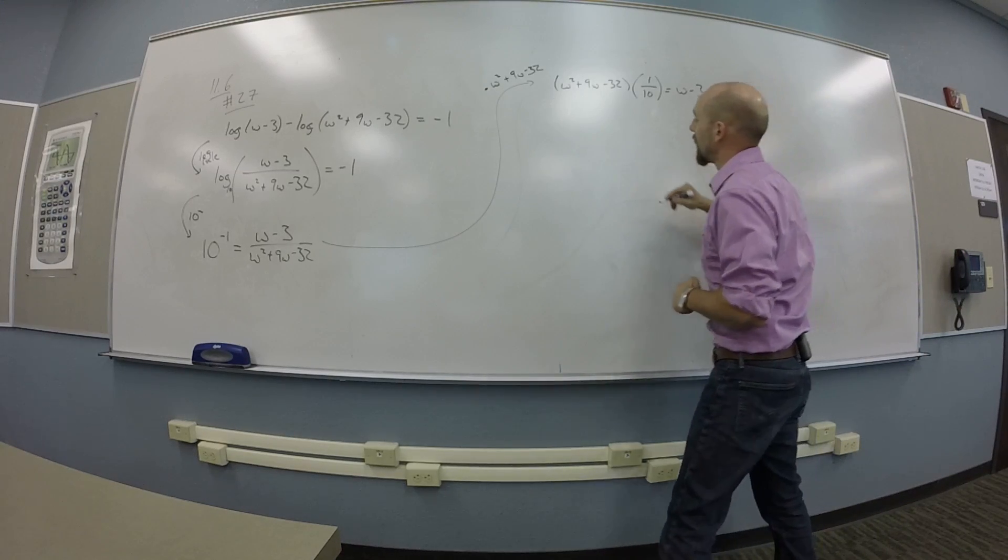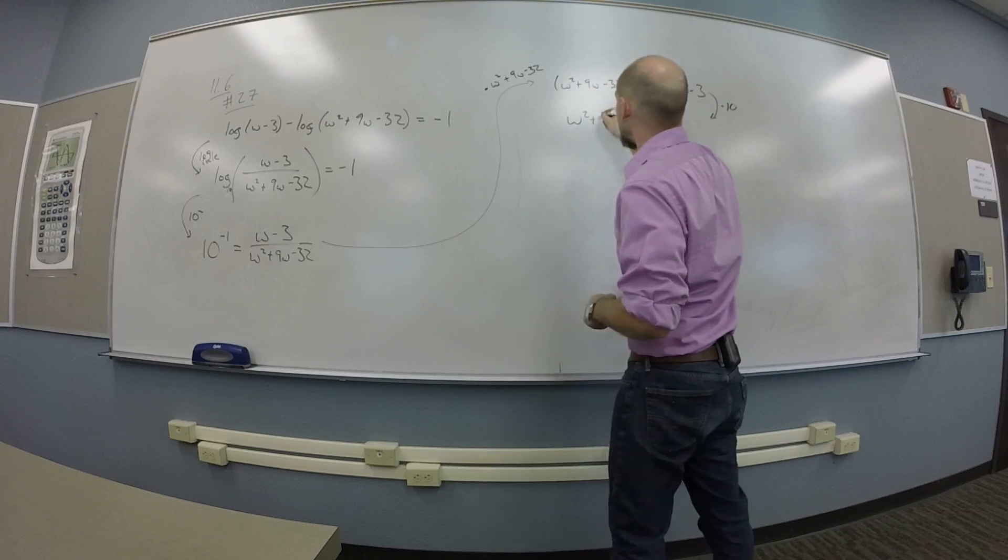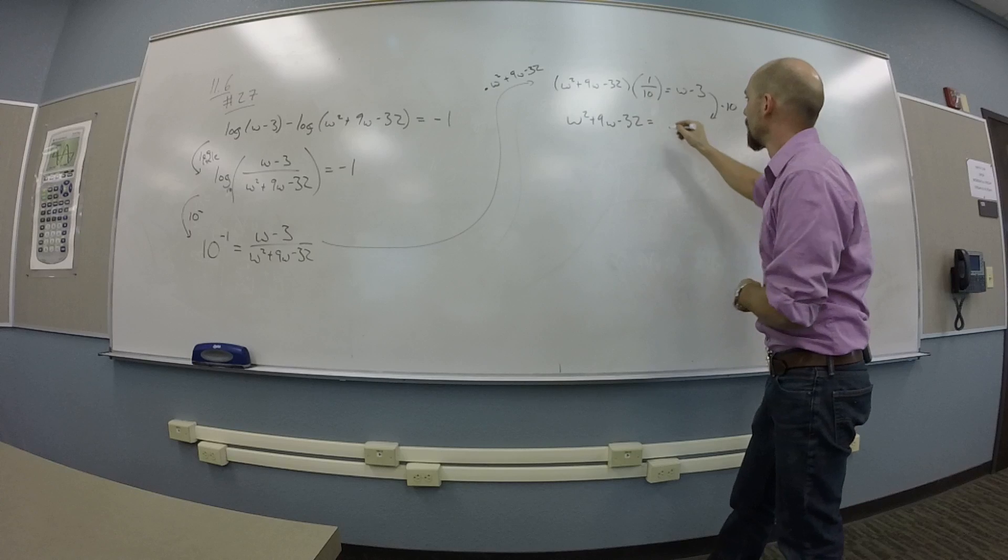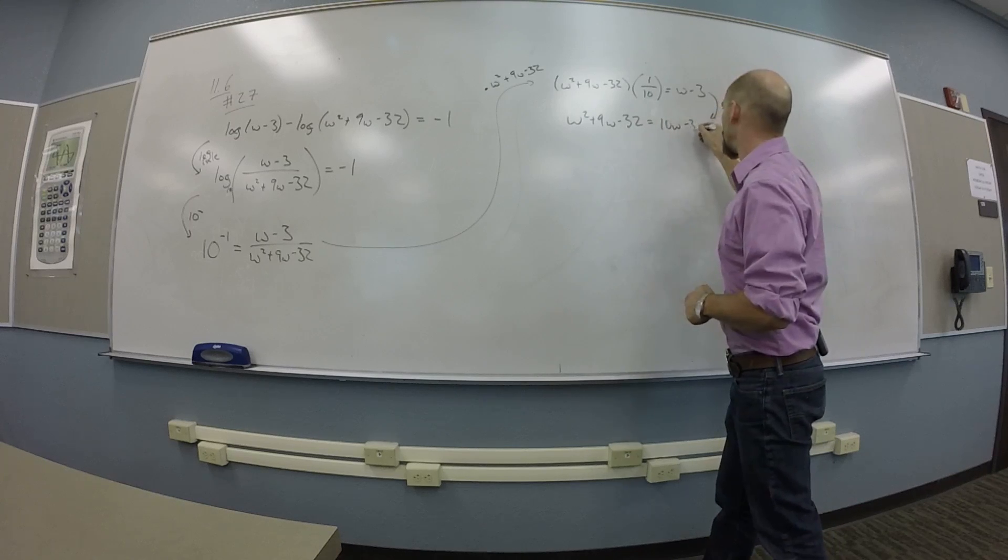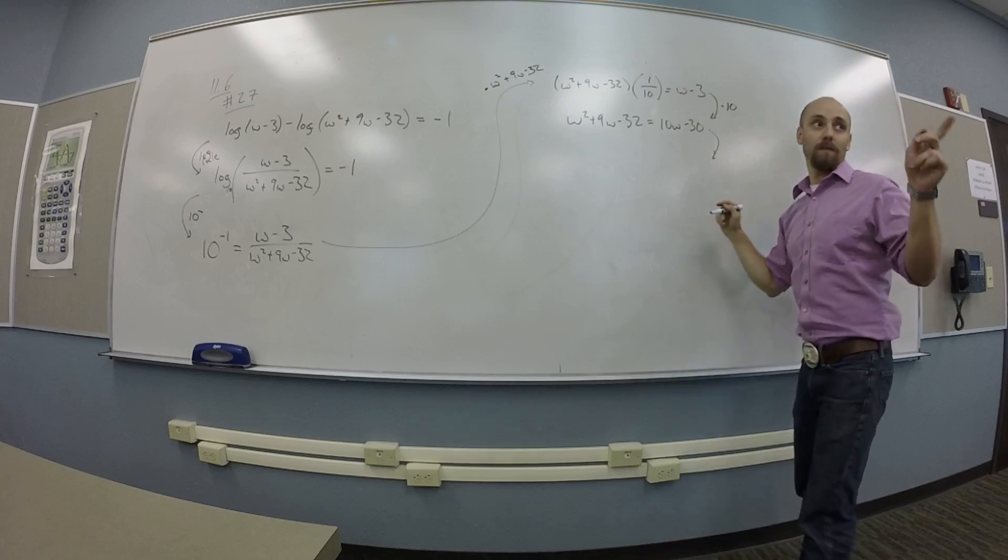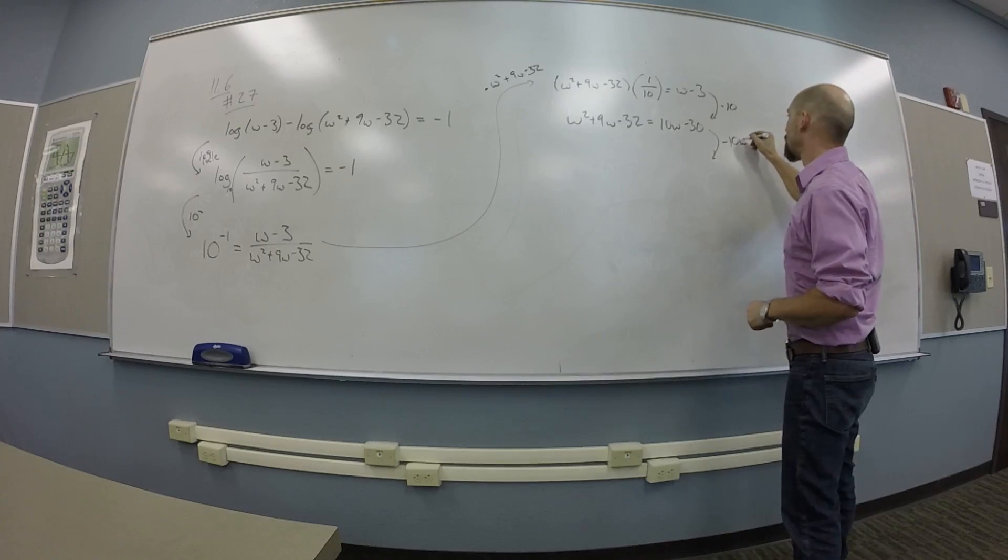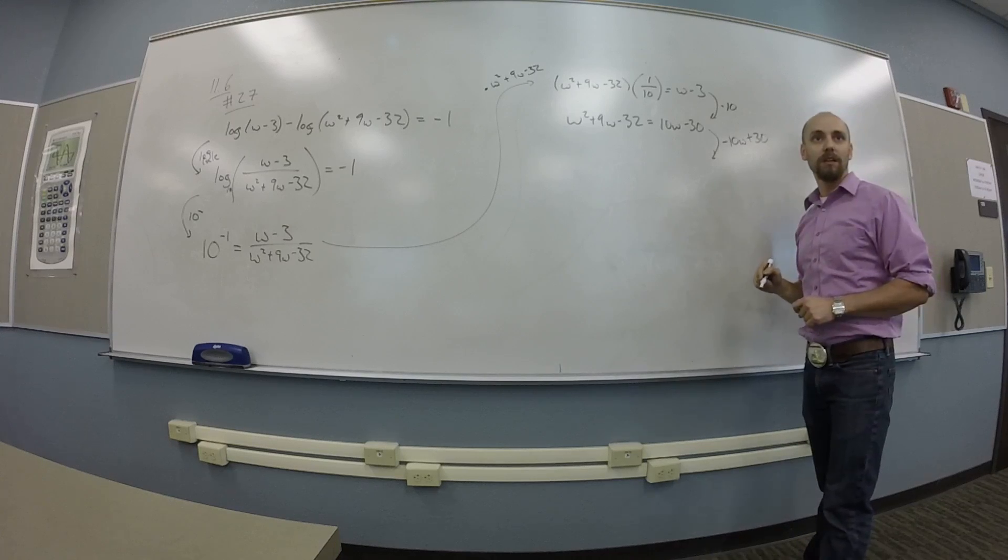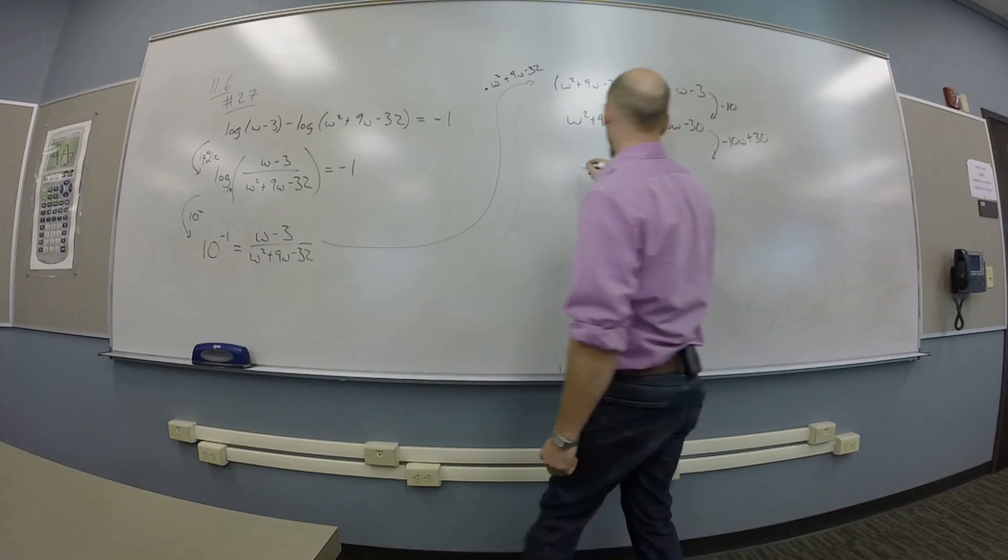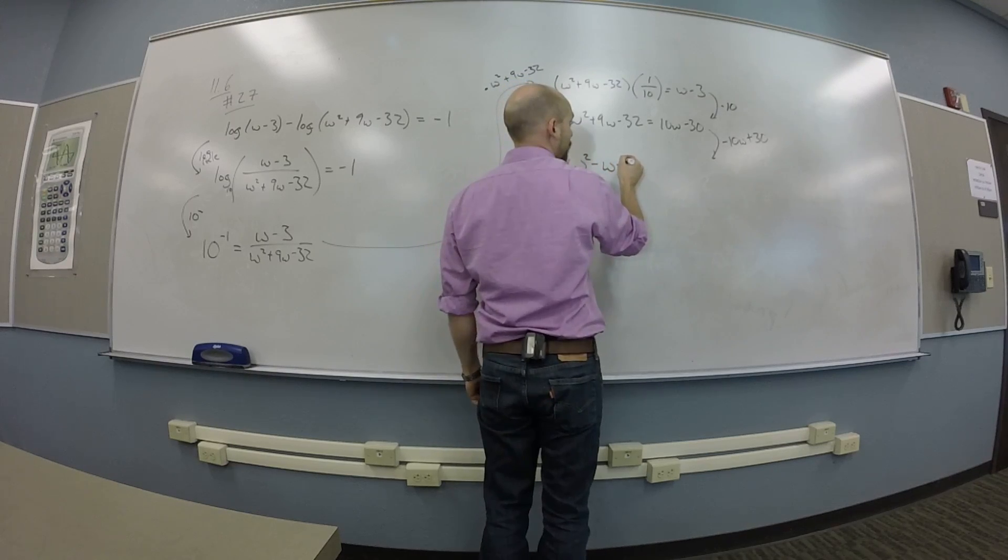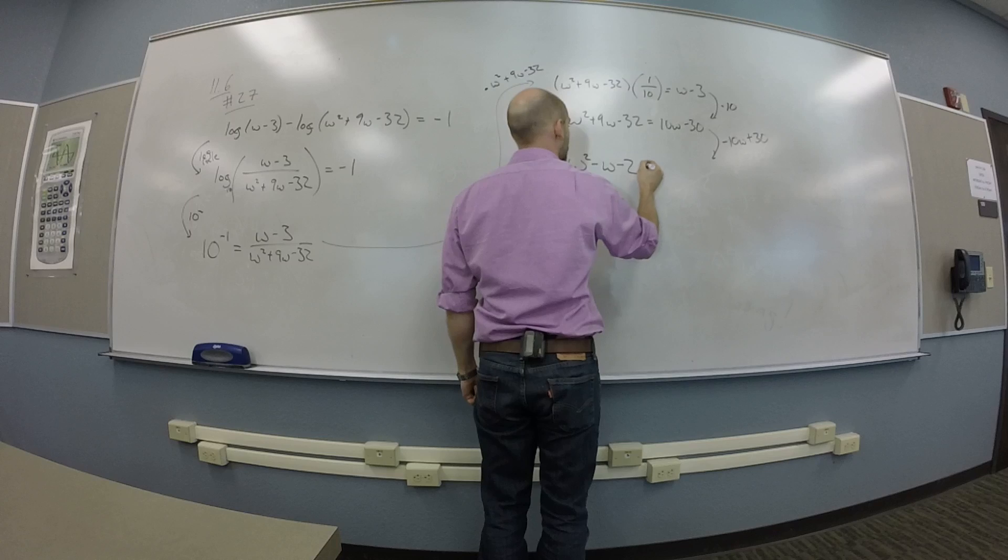If I multiply both sides by 10, I'll get W squared plus 9W minus 32 is 10W minus 30. Then put 10W minus 30 on the other side by subtracting 10W and adding 30. Okay, so we get rid of that stuff on the right-hand side. So it's W squared minus 1 plus 2. So we'll get W squared minus W plus? Oh, minus 2. Minus 2 is 0.